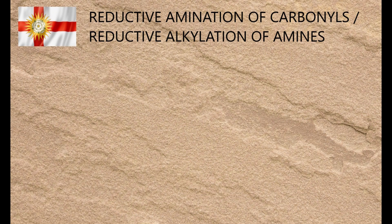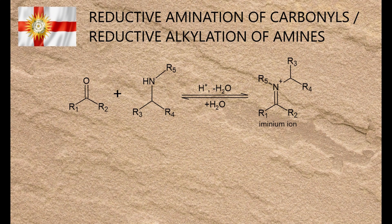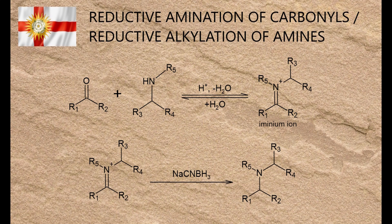There are various methods available for reductive alkylation of amines, or reductive amination of aldehydes and ketones, which basically amounts to the same thing. The most commonly taught one involves the formation of an iminium ion by condensation, which is reduced to the amine by sodium cyanoborohydride.